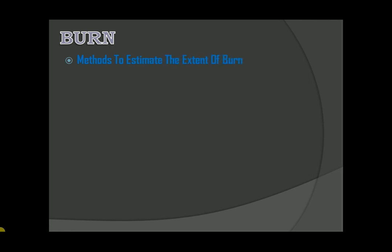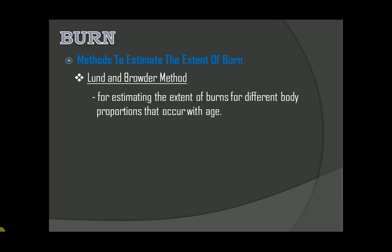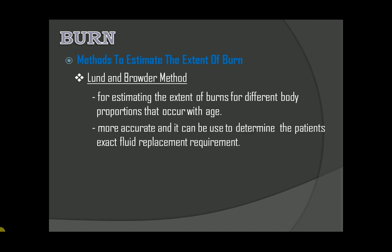Methods to estimate the extent of burn. First, we have the Lund and Browder method. This method is used for estimating the extent of burns for different body proportions that occur with age. It is the preferred method for children instead of using the rule of nine, due to the size of the head that occupies a large proportion and the lower limbs being smaller compared to the adult.